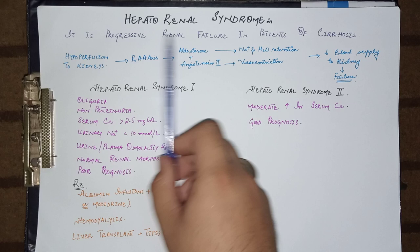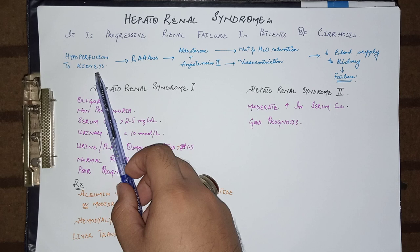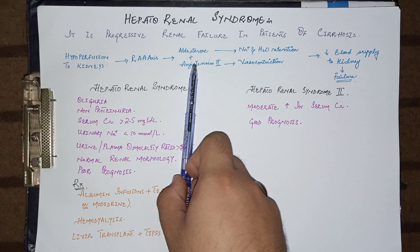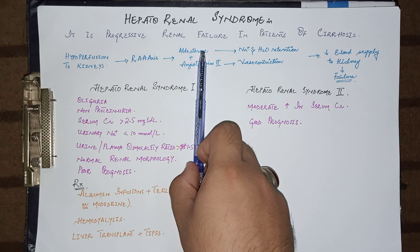In cirrhosis patients there is hypoperfusion to the kidneys, that is reduced supply of blood to the kidneys. As a result there is activation of the renin-angiotensin-aldosterone axis, which causes increased levels of aldosterone and angiotensin 2. Aldosterone increases sodium levels as well as water retention in the body, and angiotensin 2 causes vasoconstriction.